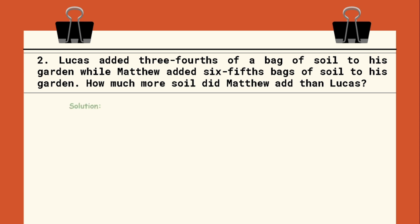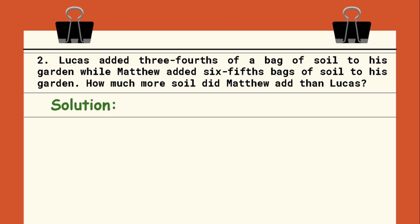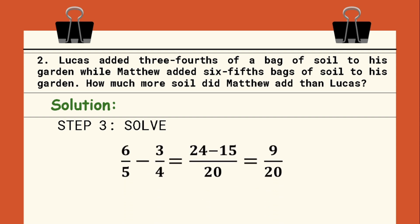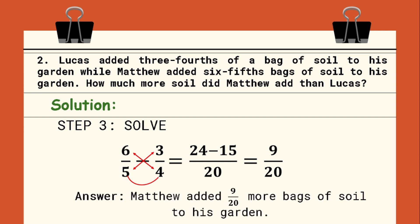Step 3: we will now solve the expression. Since we are dealing with subtracting fractions, we can use the butterfly method. We multiply 5 and 4 to get our common denominator of 20. We then take the diagonals and multiply: 6 times 4 is 24, and 3 times 5 is 15. So we have 24 minus 15 over 20, giving us the answer of 9 over 20. Matthew added 9 over 20 more bags of soil to his garden.